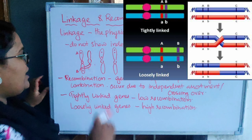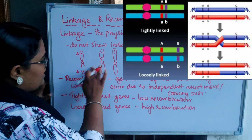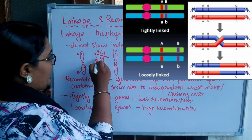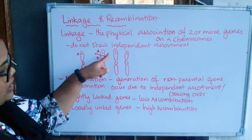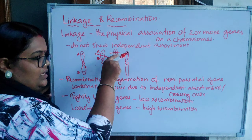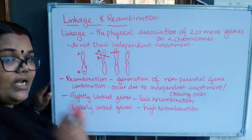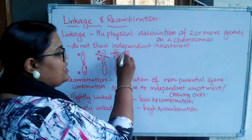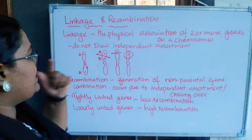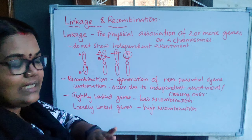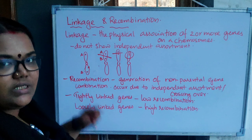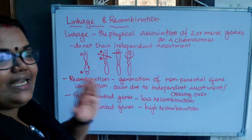If crossing over takes place between genes A and B, then these two genes can be separated. But if the genes are very closely associated, the chances of crossing over between them is really less — there is almost no chance of separation because they are so closely associated. This physical association is called linkage. Linked genes will not show any independent assortment.